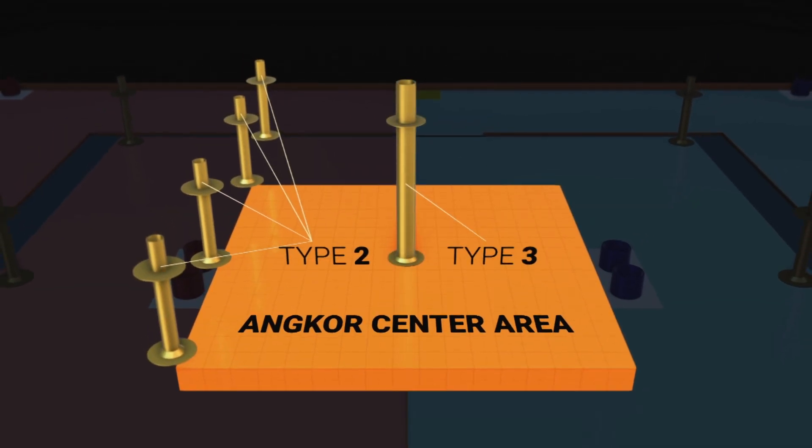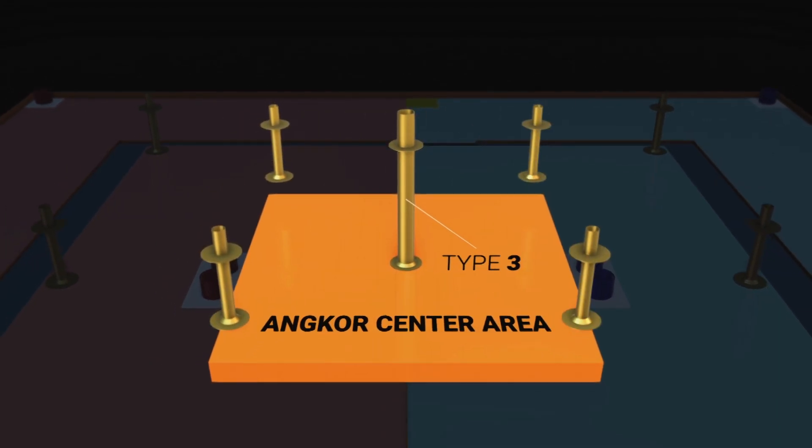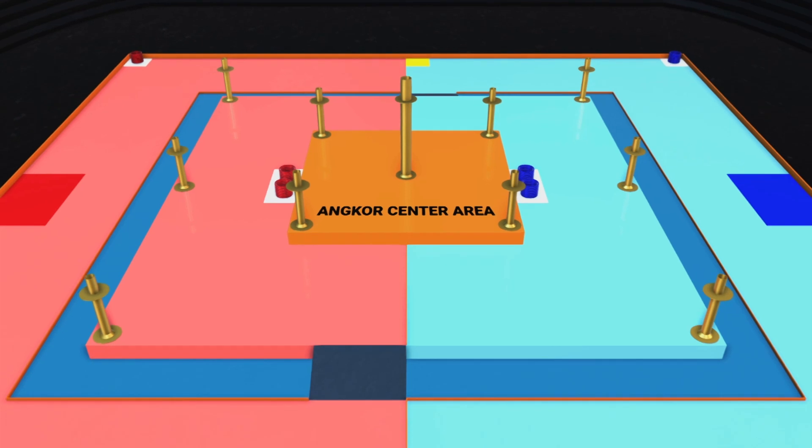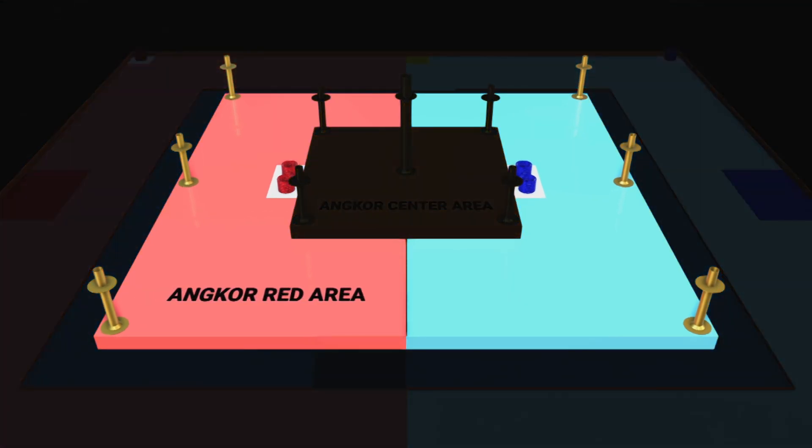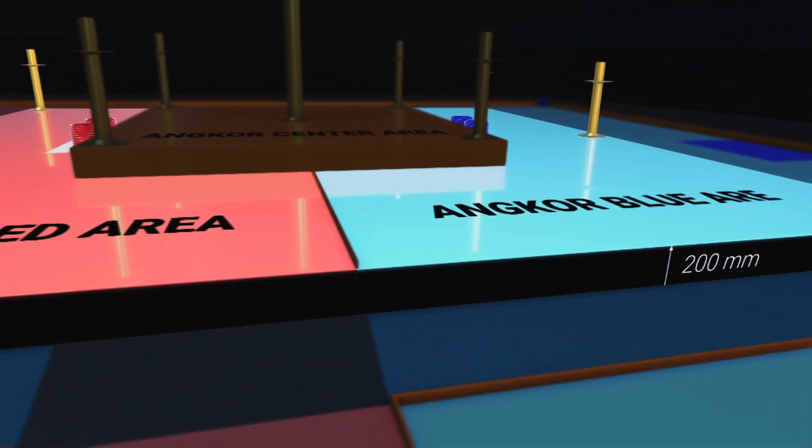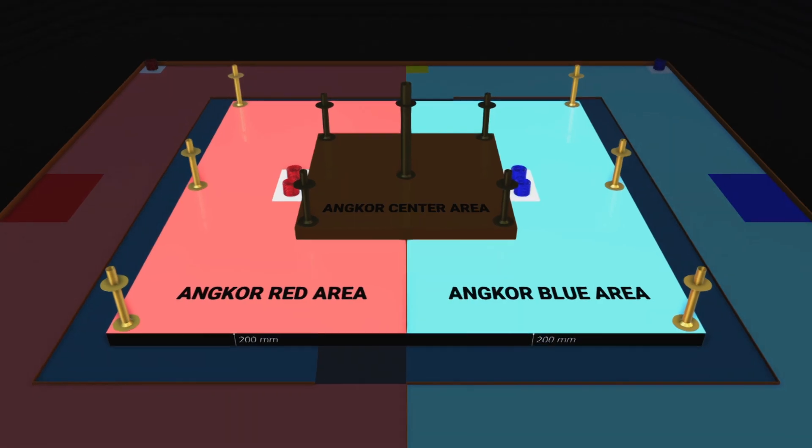One pole, which is type 3, is in the middle of Angkor Center area. The Angkor Center area is surrounded by Angkor Red area and Angkor Blue area, which is raised by 200mm from the field.